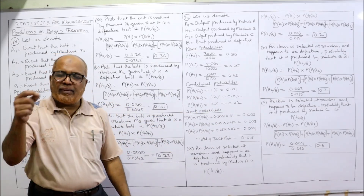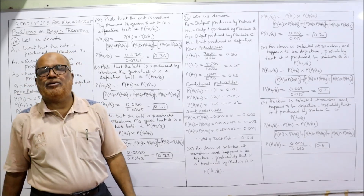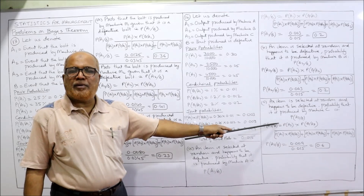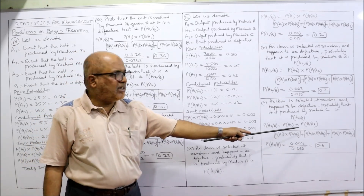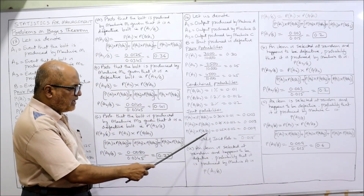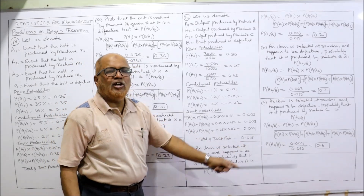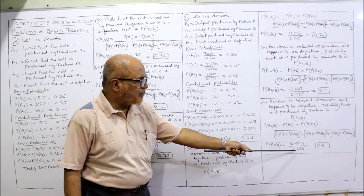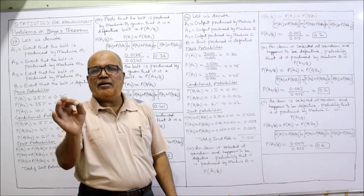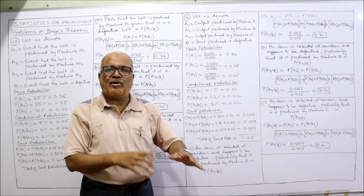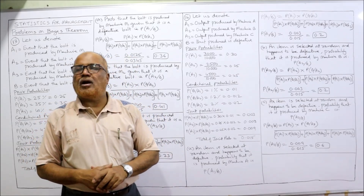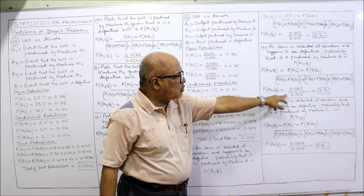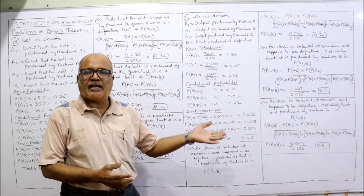Last: what is the probability that the defective item comes from machine C? P(A3|B) = P(A3)·P(B|A3) divided by sum of joint probabilities = 0.009 ÷ 0.015 = 0.6. To verify: 0.2 + 0.2 + 0.6 = 1. The total of posterior probabilities equals 1, confirming our calculations are correct.